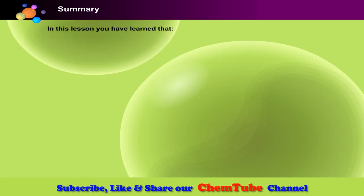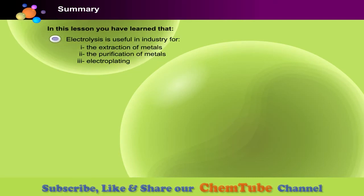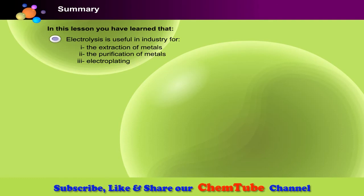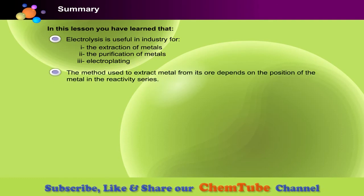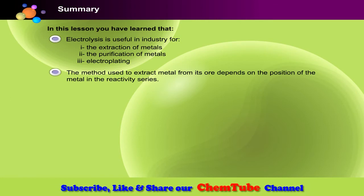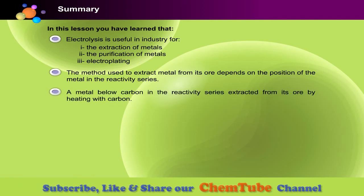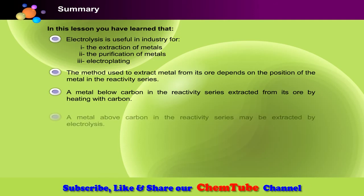At the end of this lesson you have learned that electrolysis is useful in industry for the extraction of metals, the purification of metals, and electroplating. The method used to extract a metal from its ore depends on the position of the metal in the reactivity series. A metal below carbon is extracted by heating with carbon; a metal above carbon may be extracted by electrolysis.